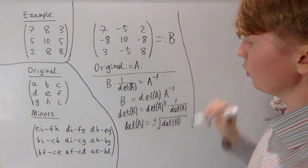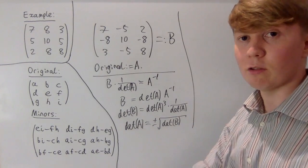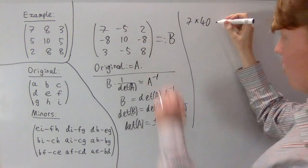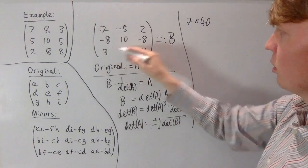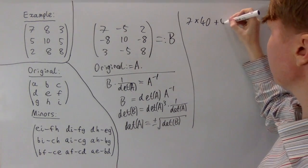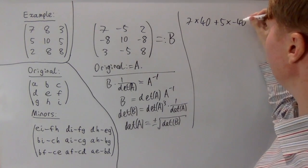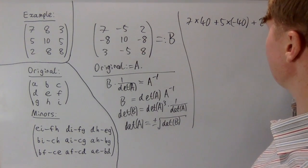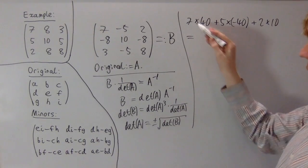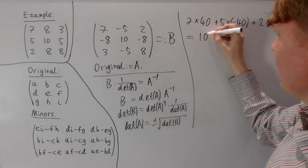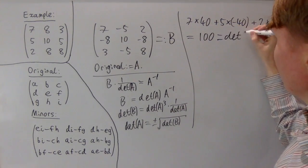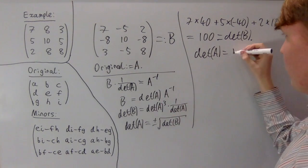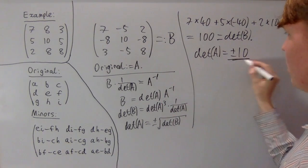Let's calculate the determinant of B to work out what the determinant of our original matrix was. For the determinant of B: 7 times 40, then minus negative 5 times negative 40, which gives plus 5 times negative 40, and finally 2 times 10. So the determinant of B is 280 minus 200 plus 20, which equals 100. This tells us that the determinant of A is plus or minus the square root of 100, so plus or minus 10.